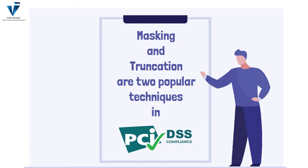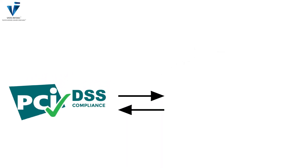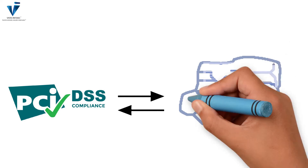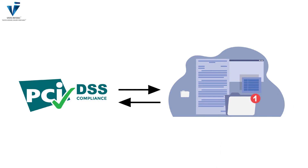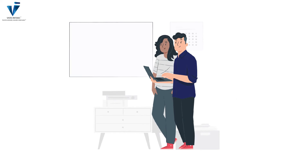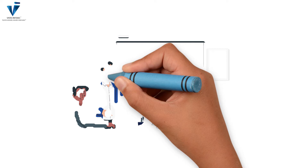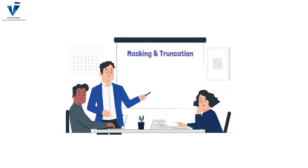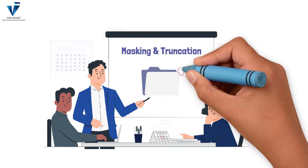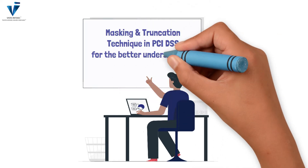Masking and truncation are two popular techniques in PCI DSS compliance that are often used to meet the requirements. The PCI Council states that no PAN data should be stored unless it is rendered unreadable. PCI DSS requirement 3.4 clearly states that merchants must implement certain measures to render cardholder data unreadable. Today we explain both techniques and their differences for the better understanding of our viewers.